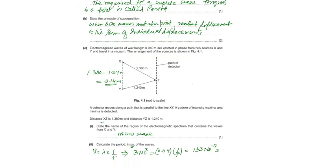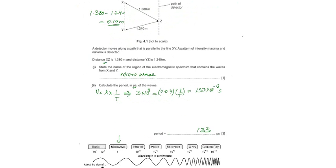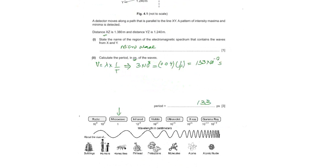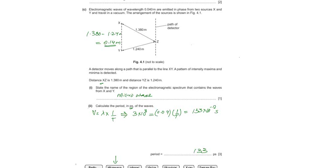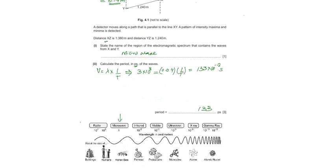Part 1. State the name of the region of the electromagnetic spectrum that contains the wave from X and Y. We need to memorize this. This wave is having 0.04 meter in the microwave. We need to memorize it.